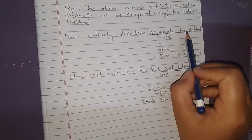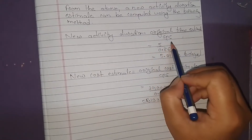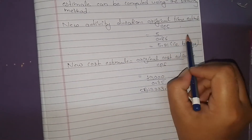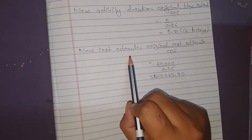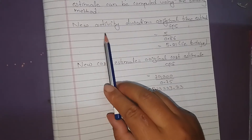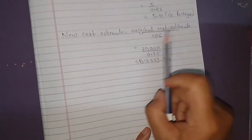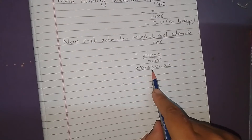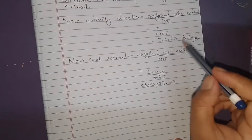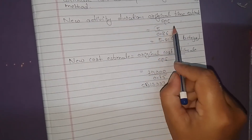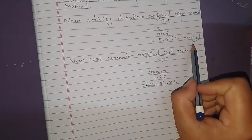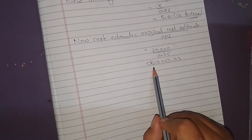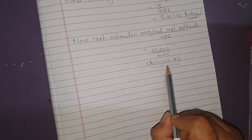The new activity duration equals original time divided by SPI. Original time is 5 days and with the computed SPI, the tentative new duration is approximately 6 days. For the new cost estimate, the original cost is RS 10,000 and dividing by CPI gives approximately RS 13,333. Therefore, we project the activity will take 6 days and cost RS 13,333.